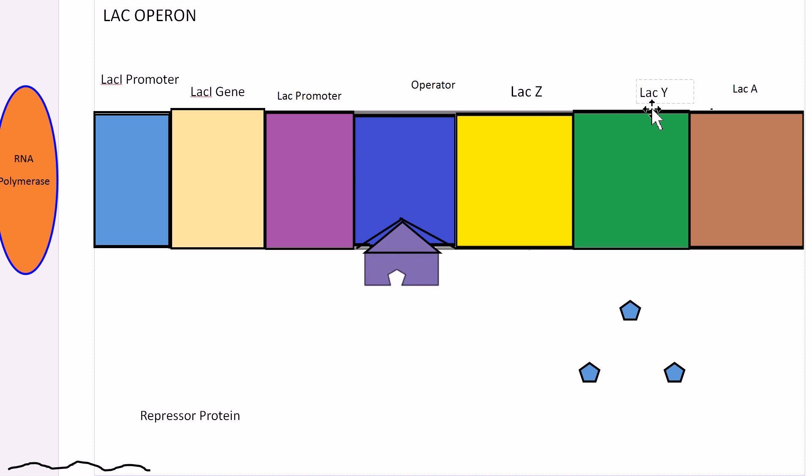The lac Y gene encodes lactose permease, a protein which becomes embedded in the cytoplasmic membrane to enable transport of lactose into the cell. The lac A gene encodes acetyltransferase but it is not as important for the operon function.